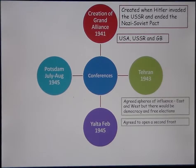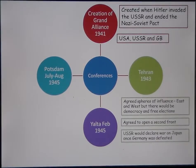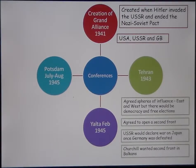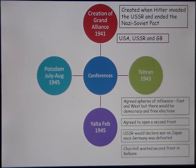They agreed to open a second front, as Stalin and the Soviets had been fighting the Nazis alone, putting a huge strain on the Soviet Union. The USSR also agreed to declare war on Japan once Germany was defeated. Churchill wanted the second front to be in the Balkans, in Eastern Europe, to limit Soviet influence there, as he feared it was an attempt to spread communism. Churchill and Stalin did not get on well, but Roosevelt and Stalin cooperated, partly because Americans needed Soviet help against Japan.